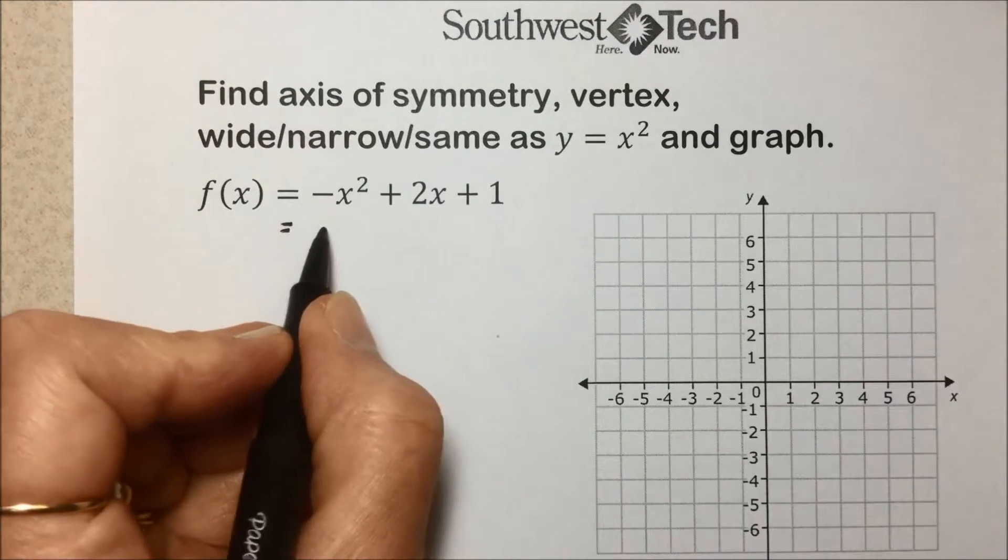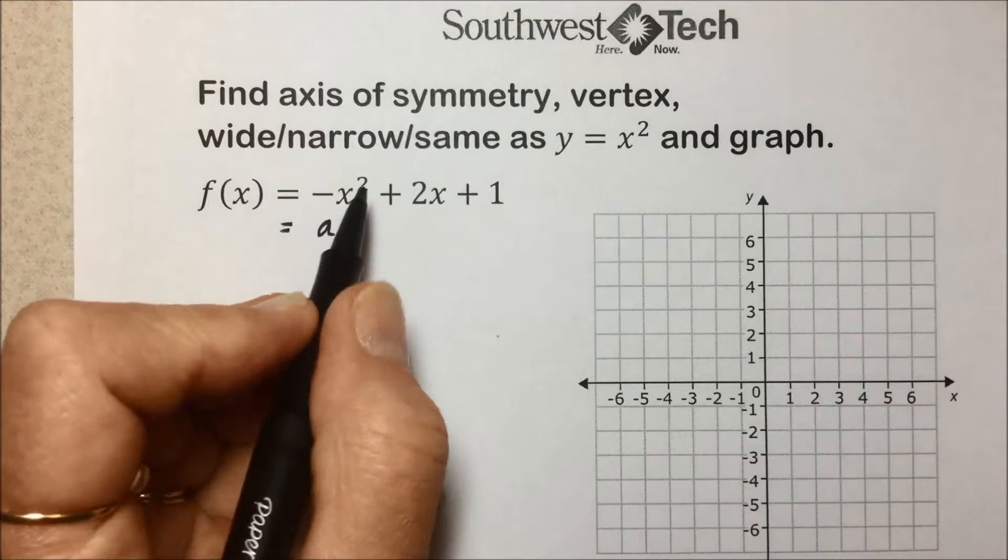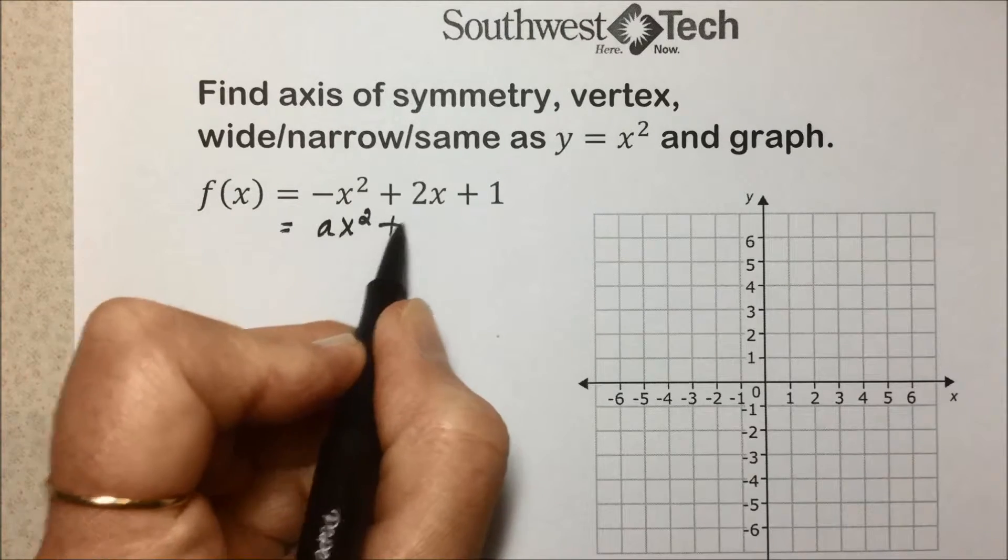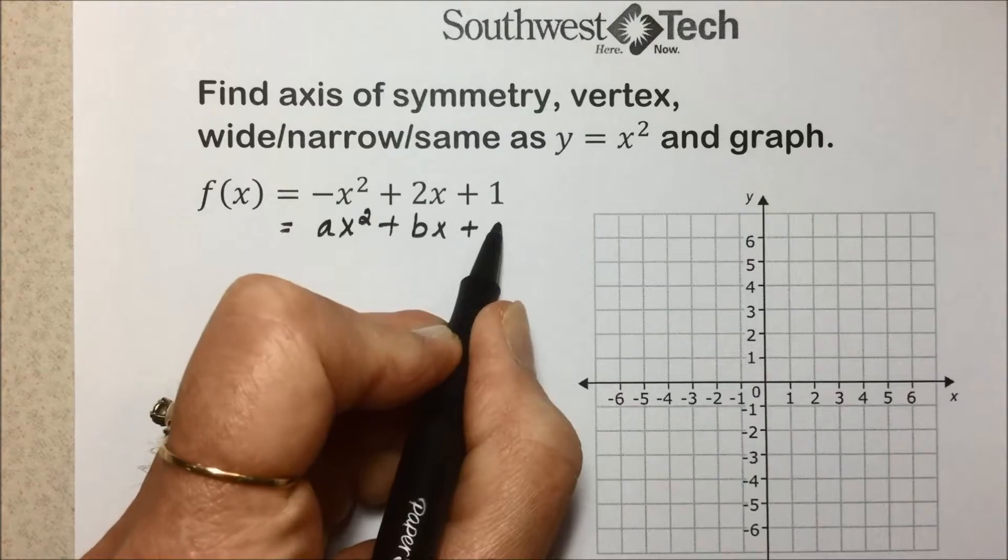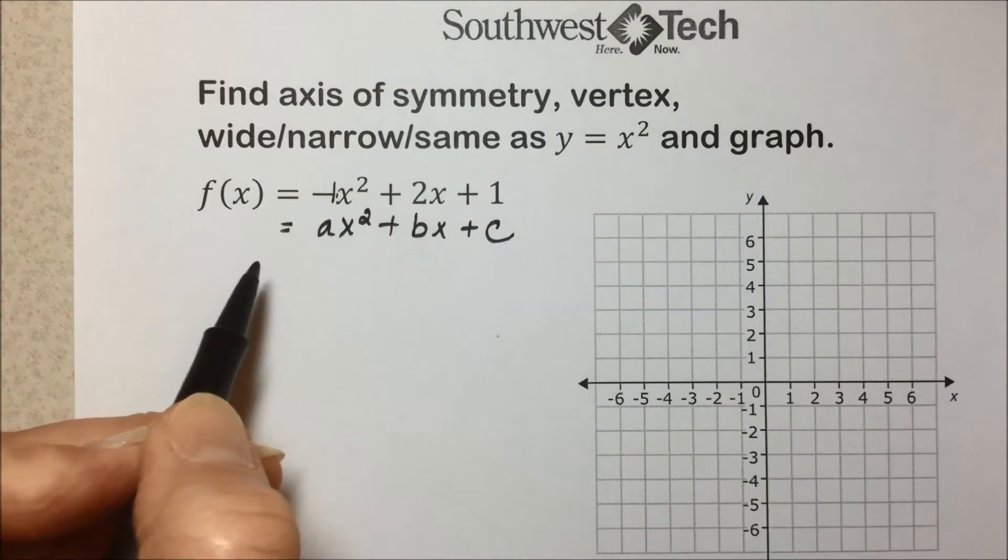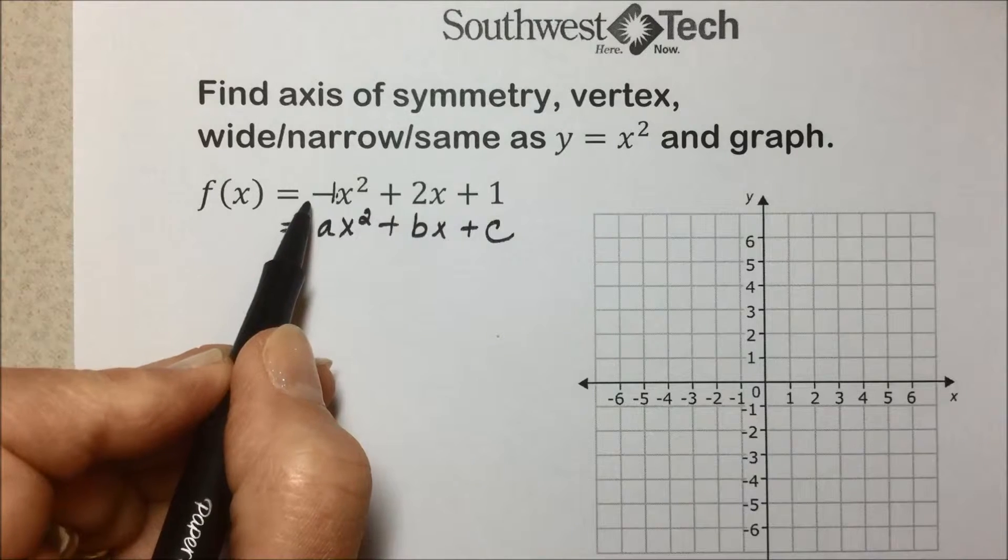We're going to compare this to our quadratic generic function of ax² + bx + c so that we can see that our value of a, the coefficient on our x² term, is -1,